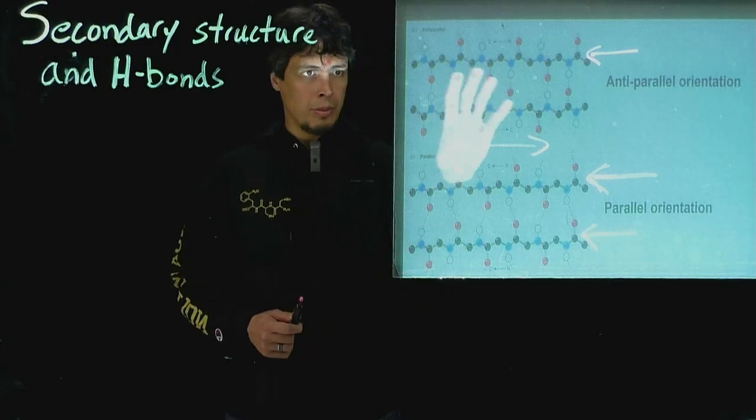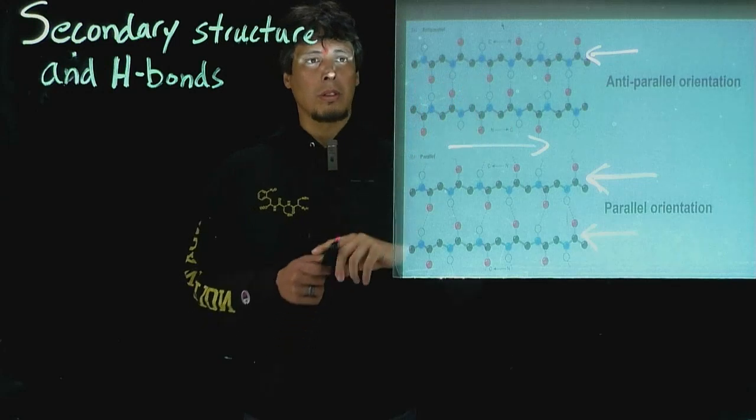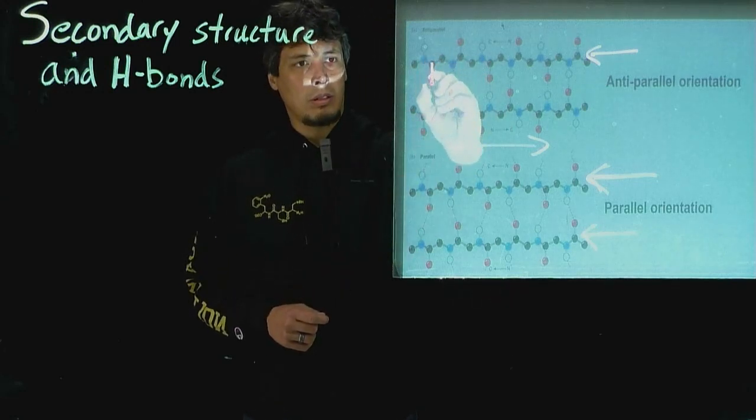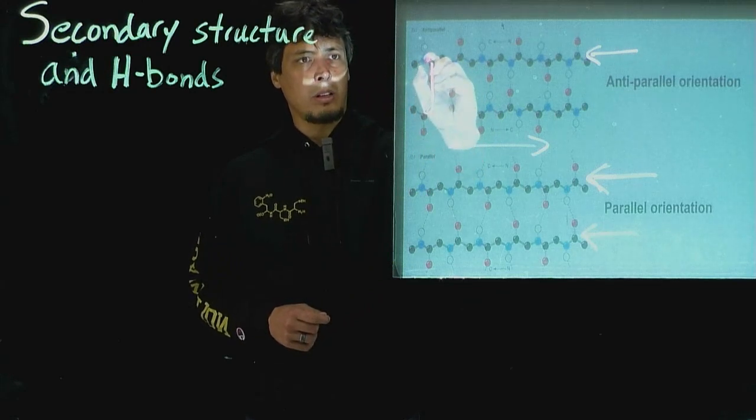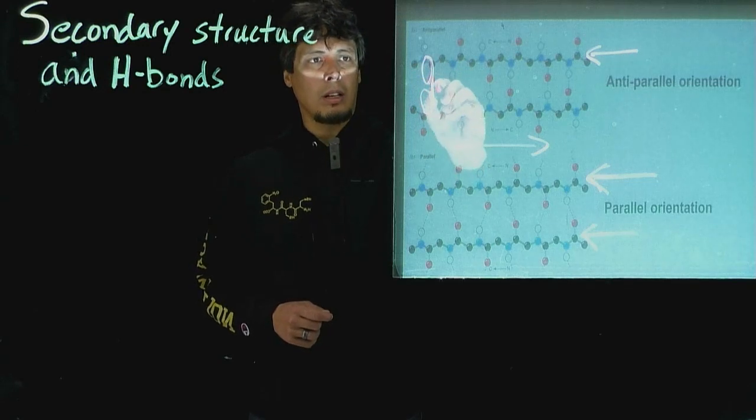But if you look closely, you'll see that the orientation is different. So the angle, for instance, between the H-bond donor down here and the H-bond acceptor, or we think of the CO, is 180 degrees.